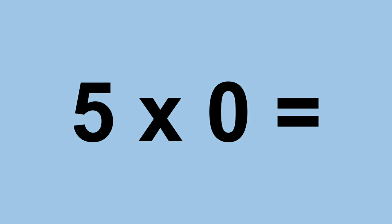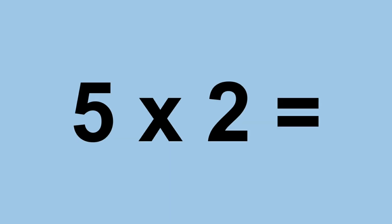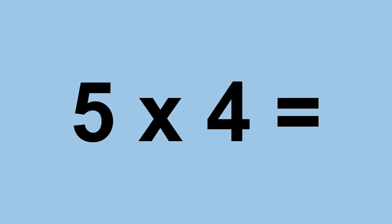Five times zero equals zero. Five times one equals five. Five times two equals ten. Five times three equals fifteen. Five times four equals twenty.